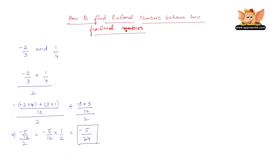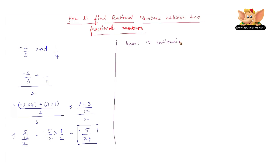So let us go to another example. This is a slightly different example. Here we have to insert 10 rational numbers between minus 3 by 11 and 8 by 11.